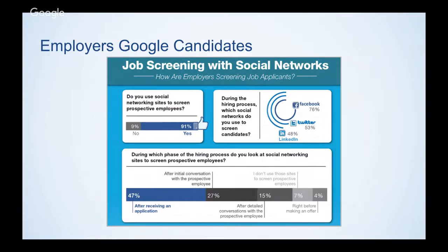We go back to how social media will impact students in the future, especially for employment. This infographic shows that Facebook, Twitter, and LinkedIn are the big three, and 91% of everyone doing hiring looks on social media. The bottom graph shows where in the hiring process they start sorting. I talk to students about having a cover letter free of spelling errors, and also going back to clean up their social media.